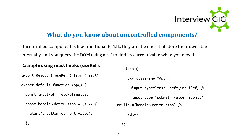What do you know about uncontrolled components? An uncontrolled component is like traditional HTML — it stores its own state internally, and you query the DOM using a ref to find its current value when you need it. Example using React hooks: import React from 'react'; export default function App() { const inputRef = useRef(); const handleSubmit = () => { alert(inputRef.current.value); }; return <input ref={inputRef} />; }